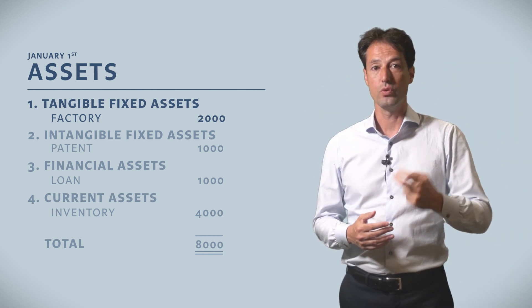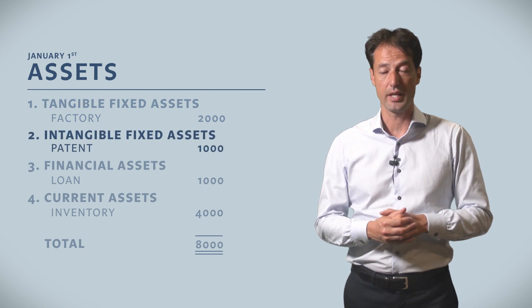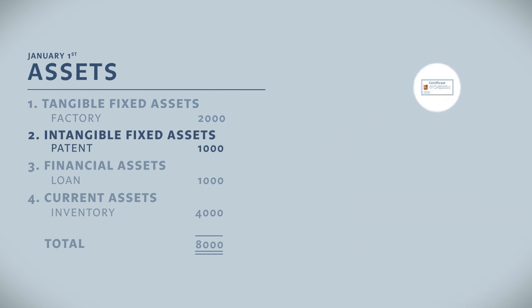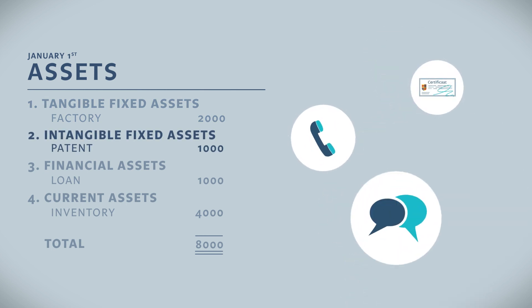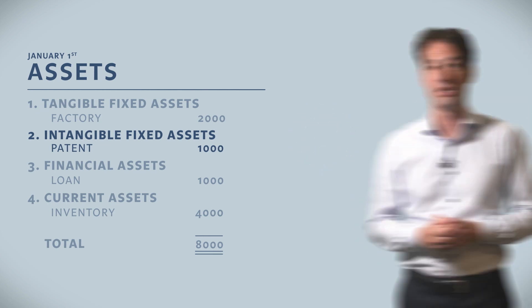Category number 2, intangible assets, are not physical assets. For example, in our case, a patent of a shoe. Since we bought the patent for 1000, this intangible asset is valued at 1000 on our balance sheet.